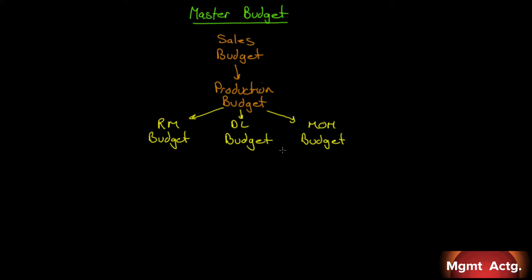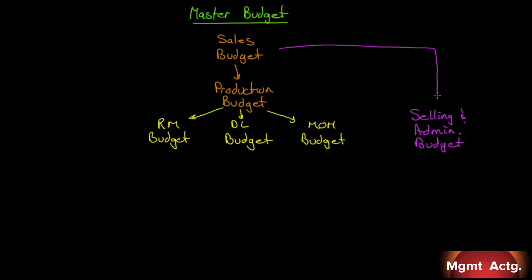Besides product costs, we have period costs. So we'll do a selling and administrative budget. The sales budget tells us how much we need to produce. To produce, we need raw materials, direct labor, and manufacturing overhead — there's our product cost. If we have product costs, we must have period costs. And the sales budget will drive the costs in selling and administration.